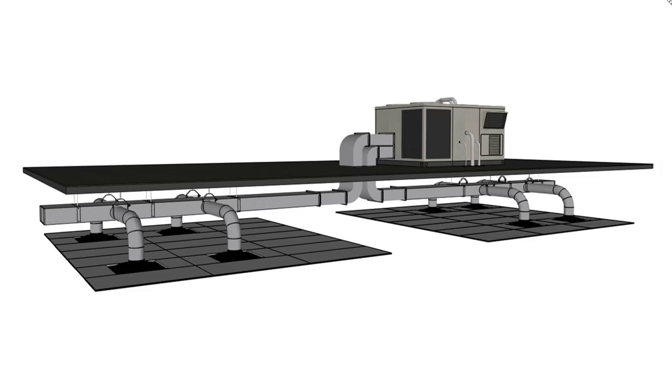An AHU takes fresh and return air, conditions this air and supplies it to the building zones using a network of ducts and diffusers, as you can see on your screen.